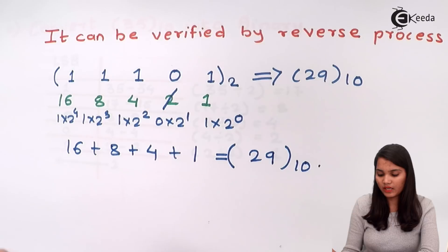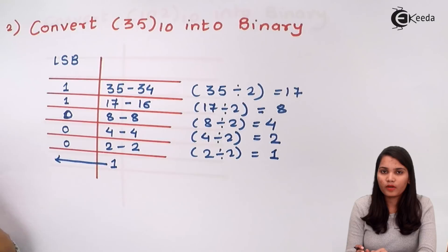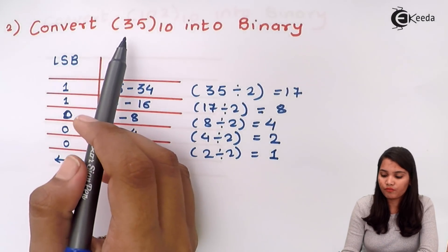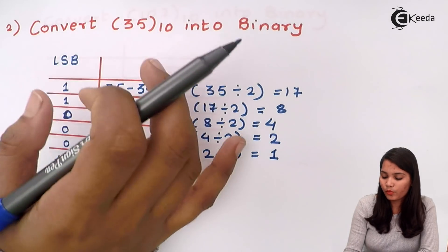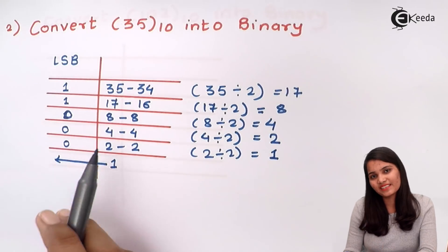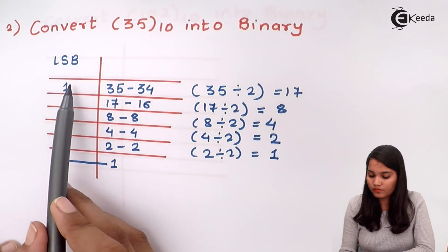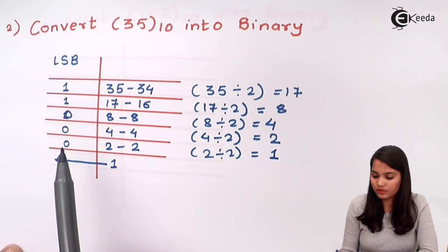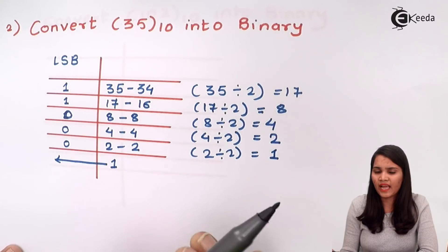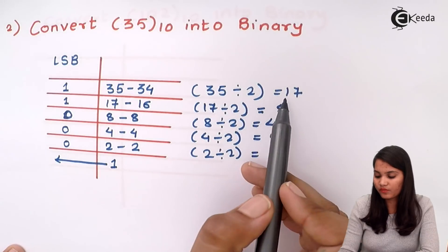Now let's see one more example of decimal to binary conversion. Let's take the example of decimal number 35 converted into binary. In the exam you have to write in this format — it is very simple and you can avoid mistakes. In the left column I have written the remainder values, and in the right column I have written the quotient and the division. So let's take 35: 35 divided by 2 gives quotient 17.